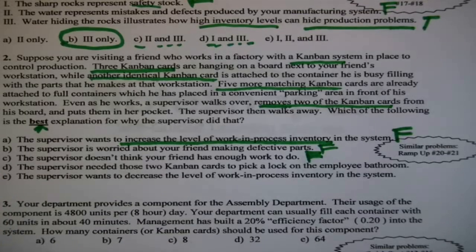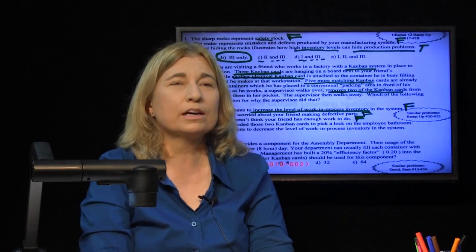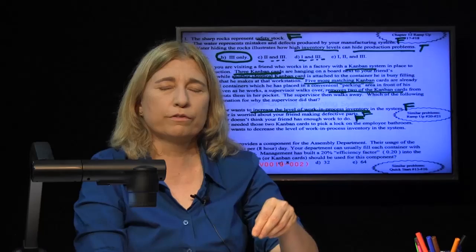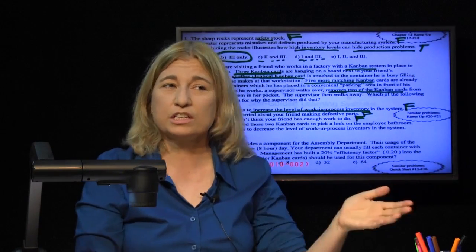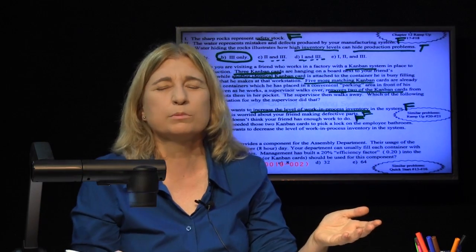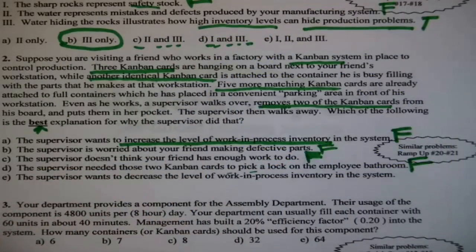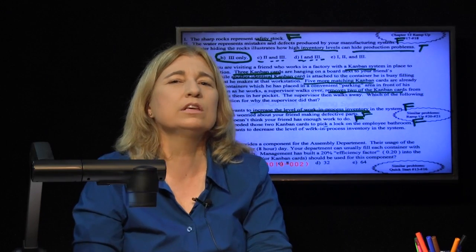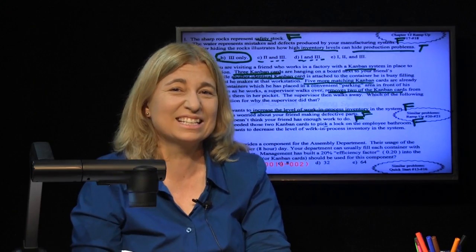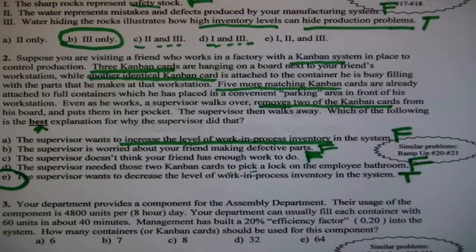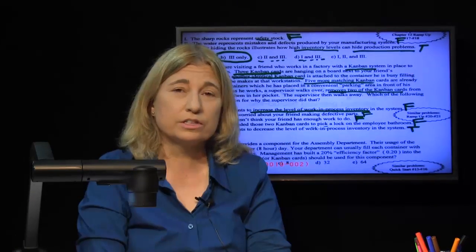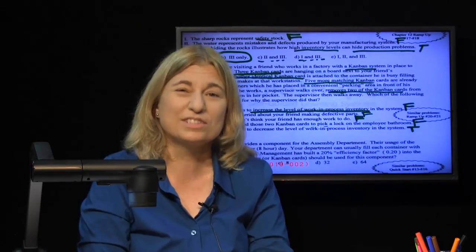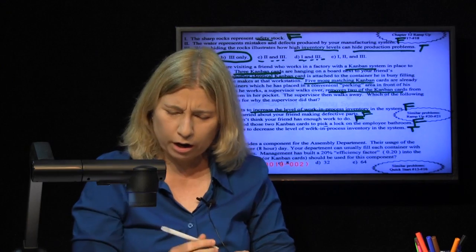The supervisor doesn't think your friend has enough work to do — we can kick that out immediately, because each card is also permission to produce inventory, and if she thinks he's not busy enough, why would she take away permission for him to be busy? The supervisor needed those two cards to pick a lock on the employee bathroom — that's possible, but it's not going to be the best answer. The absolute best answer: the whole point of a Kanban loop is to control the level of work-in-process. If the supervisor took away two cards, she wants to reduce the level of inventory in the system.